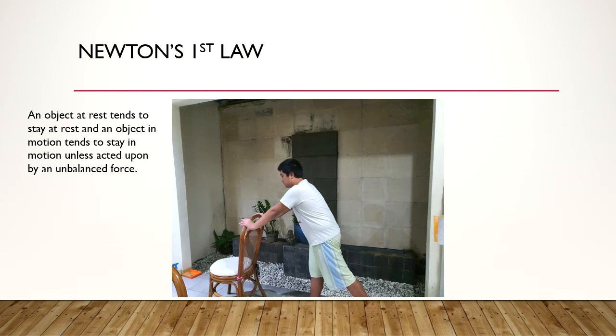In this case, the chair does not move until I apply an unbalanced force to the chair by pushing it. And even when I'm pushing the chair, it does not keep moving forever, because there is another unbalanced force acting on the chair. That is the friction of the floor, which slows the chair down.